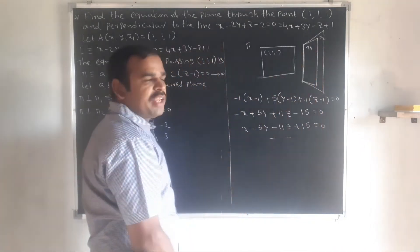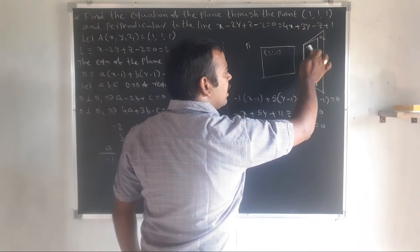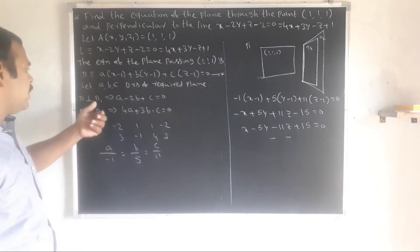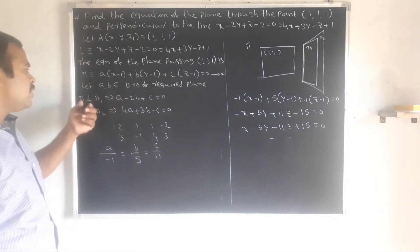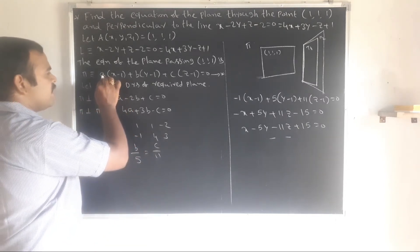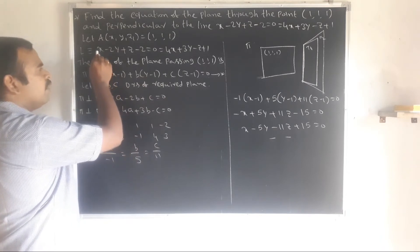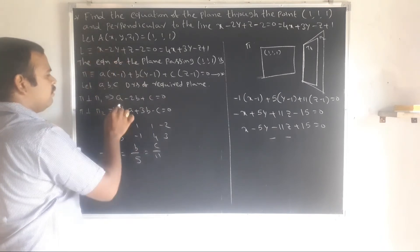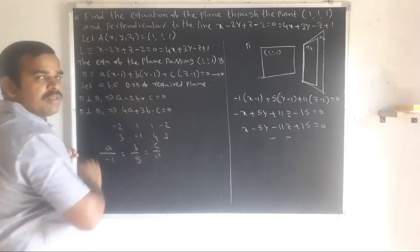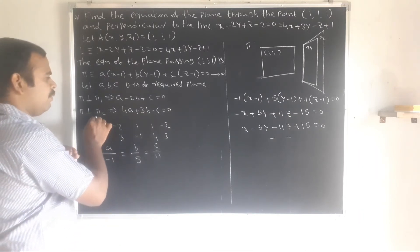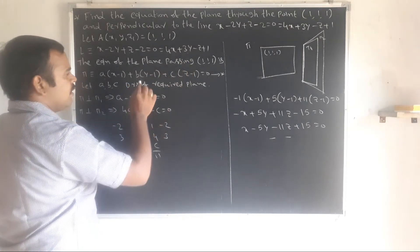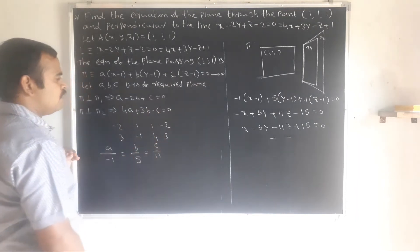Since the required plane is perpendicular to each of the two given planes, we use the condition: a1·a2 plus b1·b2 plus c1·c2 equal to 0. For the first plane: a(1) plus b(minus 2) plus c(1) equal to 0, giving a minus 2b plus c equal to 0. For the second plane: a(4) plus b(3) plus c(minus 1) equal to 0, giving 4a plus 3b minus c equal to 0. This is equation 2.